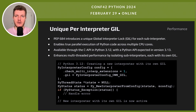PEP 684 brings a game-changing update to Python — each Python interpreter now gets its own Global Interpreter Lock. This allows true parallelism across multiple CPU cores. Currently it's accessible through the C API, and a Python API is expected in version 3.13. This feature opens a new door for high-performance Python applications and is a significant step towards optimizing Python's concurrency model.